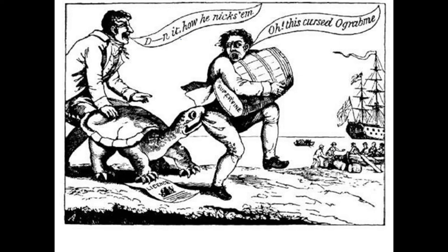We can see a critique of the embargo in this cartoon. We have a guy saying 'damn it, how he nicks him,' and we have the icon — an image that represents the embargo — which is a turtle, not known for speed or efficiency or really anything good. Instead, it's the embodiment of how awful the policy is. Here we have the turtle biting a guy, labeled 'Oh Grab Me,' which is very clever 19th-century wordplay: Embargo spelled backwards is 'Oh Grab Me.' It's grabbing this guy and stepping on his license — he's trying to get his goods to market legally, with his license, but the embargo slows him down and bites him.